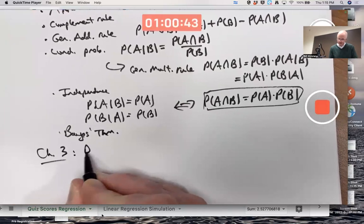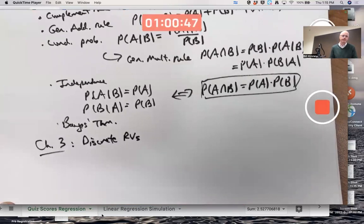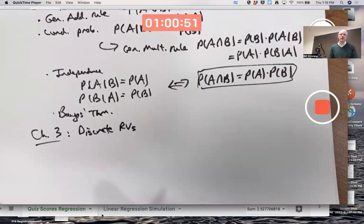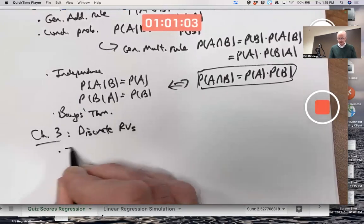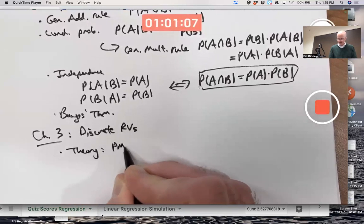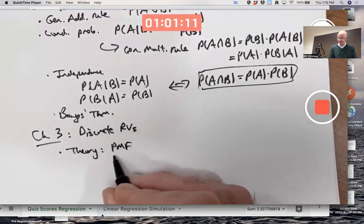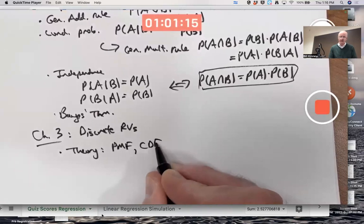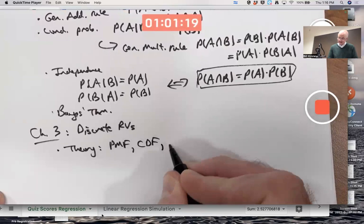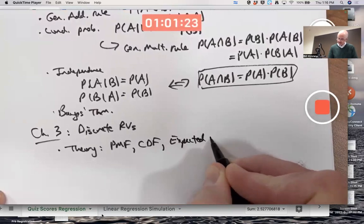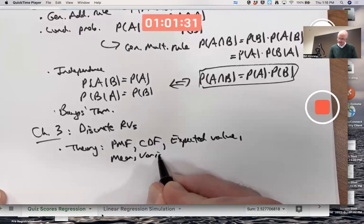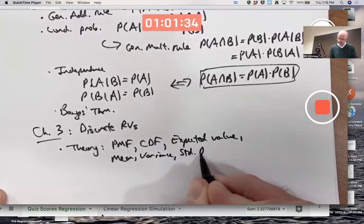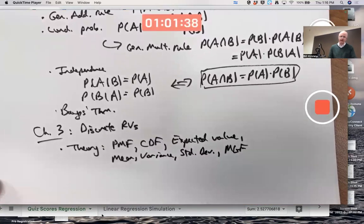There's also Bayes' theorem. I'm not going to write it down, but you might remember it's useful to think about tree diagrams to help you solve problems with Bayes' theorem. Chapter three was about discrete random variables. So we're applying chapter two to thinking about variables that are random variables, meaning their values are determined by chance, according to certain probability models. You've got the theory of what is a PMF labeled PDF in the book. PMF means probability mass function. CDF is a sum of PMF values. Expected values. Expected value, mean, variance, standard deviation, moment generating functions.